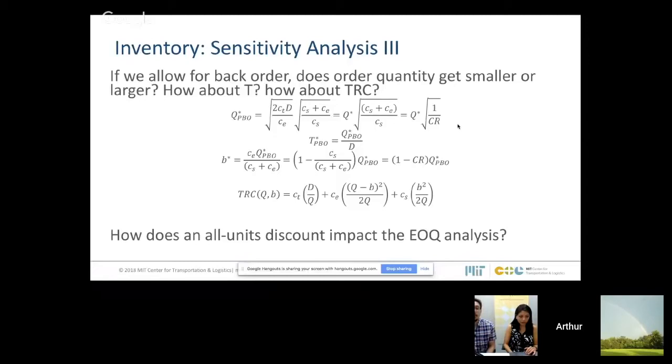So basically, if you allow for back order, you will order bigger lots. If you order bigger lots, they will last longer too, right? Because we haven't said anything changes with the demand. So demand is stable, you're just ordering more, it will last longer too. So your T will go up as well. You can also verify that by the formula. So T is just Q divided by D. If Q goes up, T goes up too.